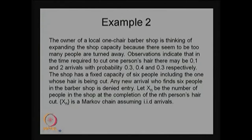Observations indicate that in the time required to cut one person's hair there may be 0, 1, or 2 arrivals with the probability 0.3, 0.4, and 0.3 respectively. This information is very important: during one person's haircut, the probability that no people turn up is 0.3, one person turns up is 0.4, and two arrivals is possible with probability 0.3. Therefore the summation of probabilities is going to be one.